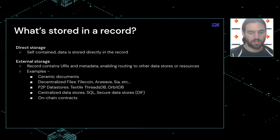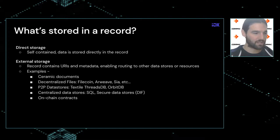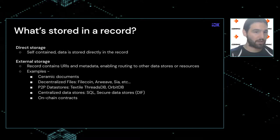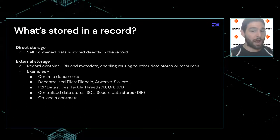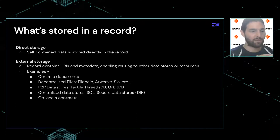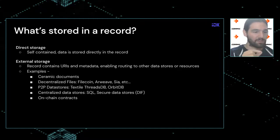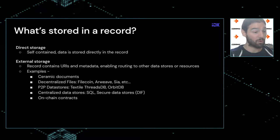Records can either directly contain data — like a basic profile where you dump JSON data into the record and it's self-contained — or records can serve as jump-off points or routing mechanisms to external storage. In that case the record contains a URI and potentially some metadata which, when resolved, routes to some external source. For example, an IDX record called 'blog posts' could contain an array of ceramic stream IDs where each stream is an independent blog post. IDX then serves as an aggregation mechanism for all those pointers.